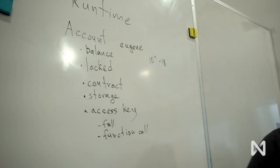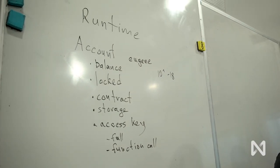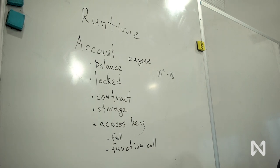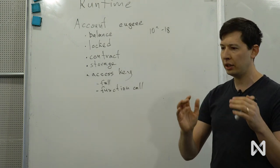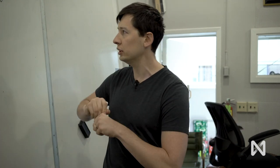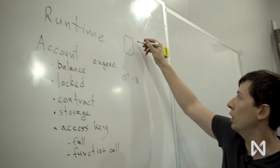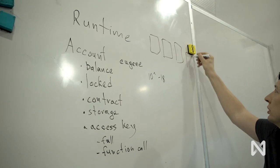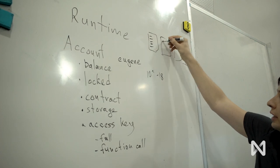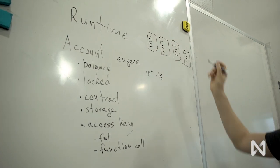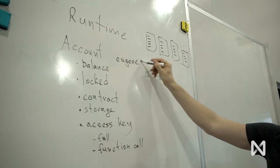So why do we talk about accounts? As you might know, NEAR is a sharded system. We have multiple shards that both contain state and processing. So a single shard contains only some accounts of the entire system. Let's say we have four shards, and I'll draw them as blocks here. So this is four shards. And on every shard, we may have multiple accounts. So my account, Eugene, is going to belong to one of the shards.